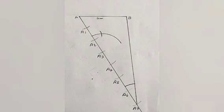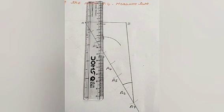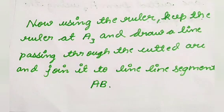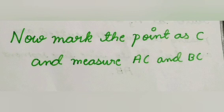Now keep the scale as shown in the image as it is straight to the cutted arc. Clear C properly and join it to the line segment AB and mark the point as C and measure AC and BC.